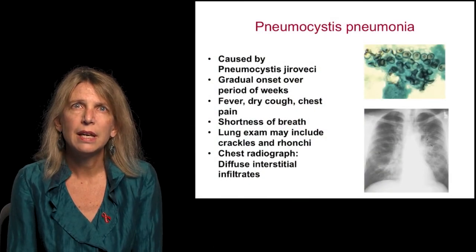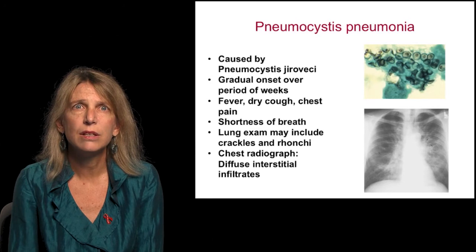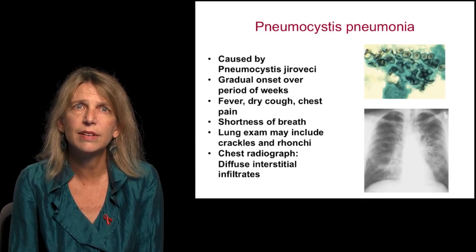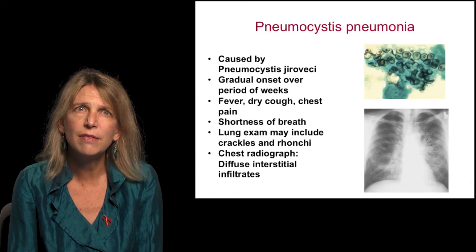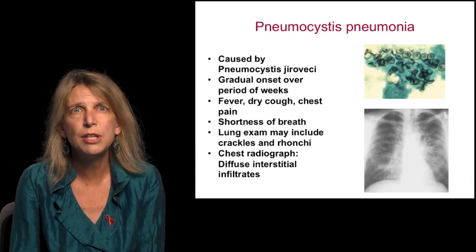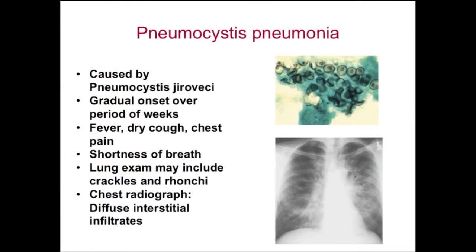Pneumocystis pneumonia is a hallmark AIDS-defining condition. It is caused by the fungus Pneumocystis jirovecii. Patients present with a gradual onset over a period of weeks of fever, dry cough, and chest pain. Patients often complain of shortness of breath. The lung exam may be normal, but may also include crackles and ronchi. The chest radiograph typically reveals diffuse interstitial infiltrates.